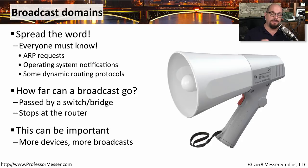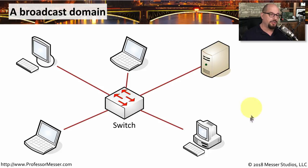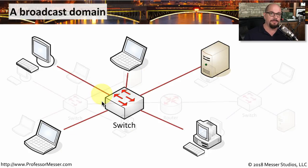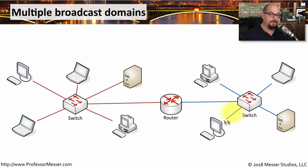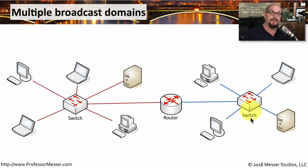This is a good reason to keep networks a convenient size. The larger these networks become, the more broadcasts will appear on the network. If you segment the network, you're going to be segmenting the amount of broadcasts that occur on a particular broadcast domain. On our modern full-duplex switch network, every device connected is on the same broadcast domain. If a device sends a broadcast frame, it will be redirected to all other devices on that switch network. To limit broadcasts, you separate the network with a router — any broadcast on one side of the router will only be seen by devices on that side.